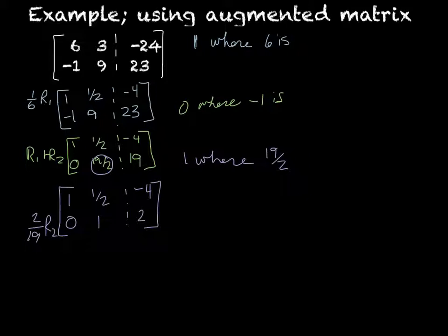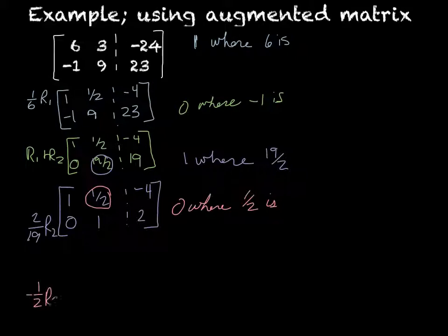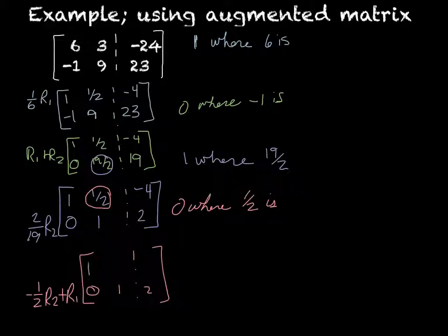The last step I have to do is to get a 0 where the 1/2 is. I'm going to multiply the second row by the opposite, so negative 1/2 times row 2 and then add that to row 1. My row 2 is not going to change: 0, 1, 2. Negative 1/2 times 0 is 0, plus 1 is 1. Negative 1/2 times 1 is negative 1/2, plus 1/2 is 0. Negative 1/2 times 2 is negative 1. Negative 1 plus negative 4 is negative 5. So my final answer is negative 5, 2.